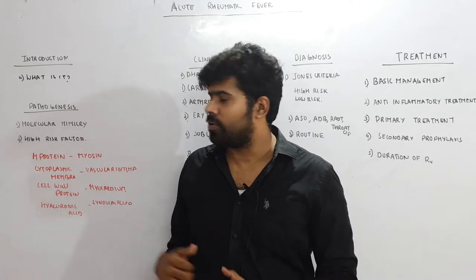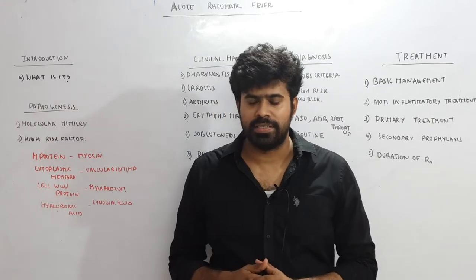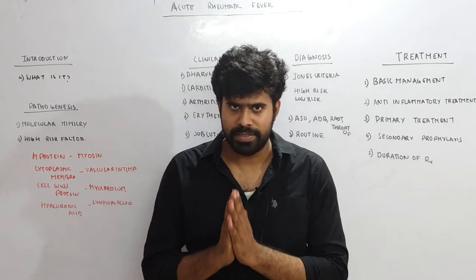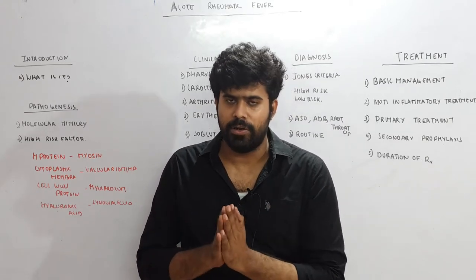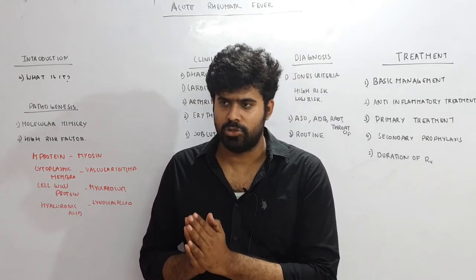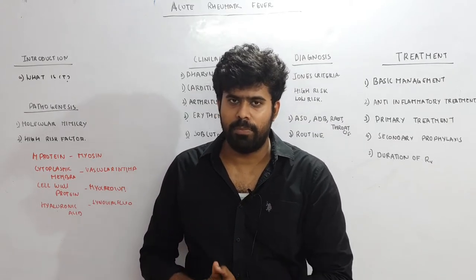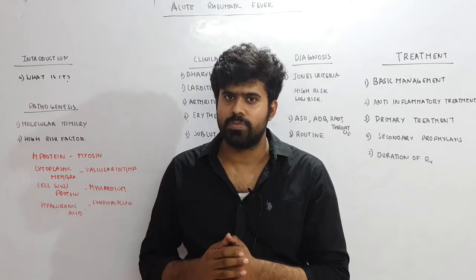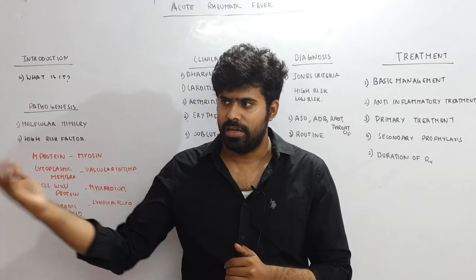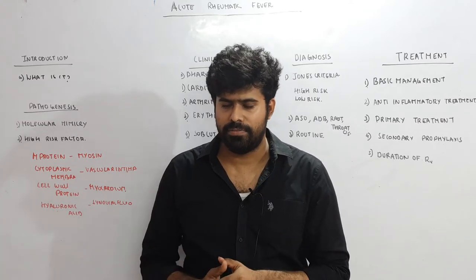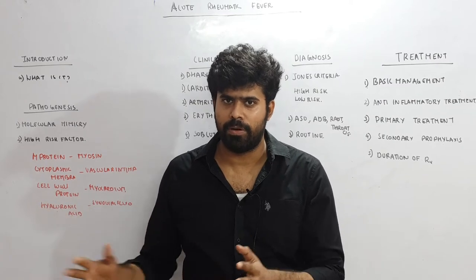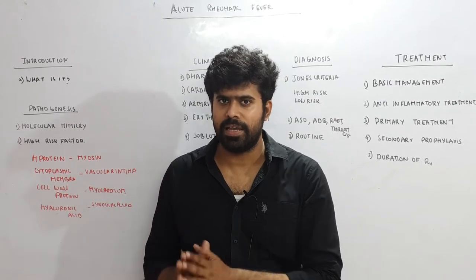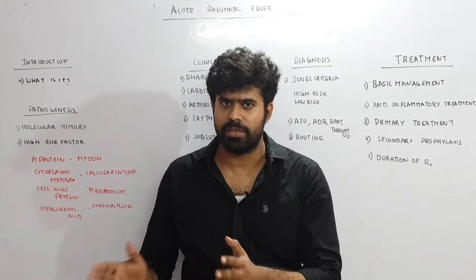What is the pathogenesis? In Acute Rheumatic Fever, a child usually between 5 to 10 years of age will develop a Streptococcal Pharyngitis. This Streptococcal Pharyngitis is more common in patients who are in overcrowded, poor population urban slums, and these people can easily get the pharyngitis.